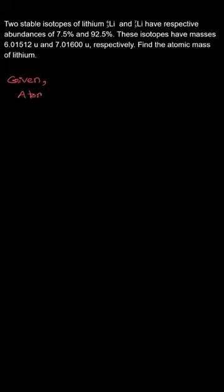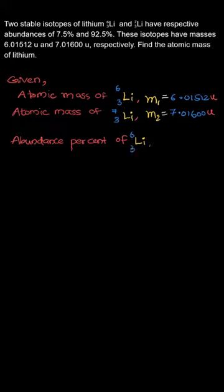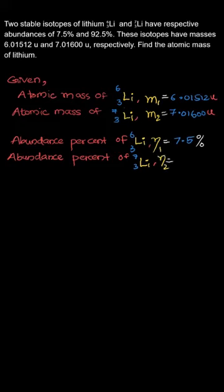So the given values are: the atomic mass of lithium-6, represented as M1, which is equal to 6.01512 units, and the atomic mass of lithium-7, represented as M2, which is equal to 7.01600 units. The abundance percentage of lithium-6, represented as eta1, is equal to 7.5%. The abundance percentage of lithium-7, represented as eta2, is equal to 92.5%.